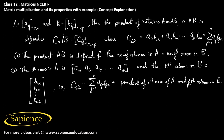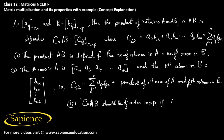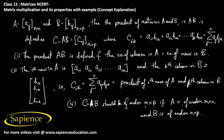The third rule is that the matrix C, which is the product AB, should be of the order m×p, if A is of order m×n and B is of order n×p. These are the rules for matrix multiplication.